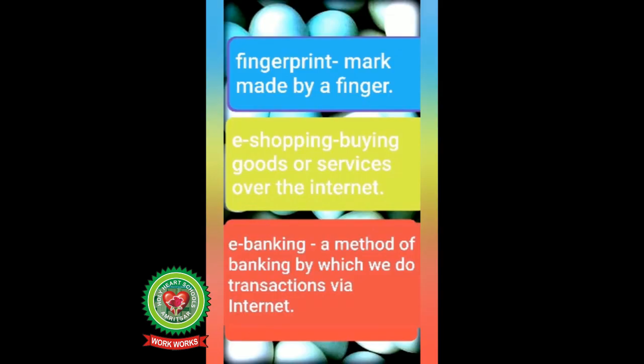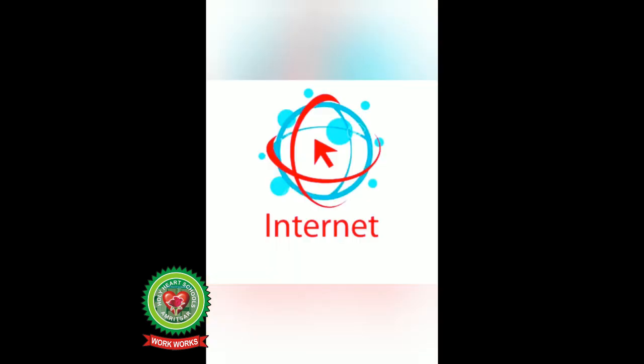Next point is internet. The internet has brought the world to our fingertips. Any information on any topic, e-shopping, e-banking, and e-tickets for travel or entertainment can be done through the internet. Emails are sent and received through the internet; it sends information to any part of the world instantly. E-shopping means buying goods or services over the internet. E-banking is a method of banking where transactions are done via internet. Most people with mobile phones and internet have the world in their hand.